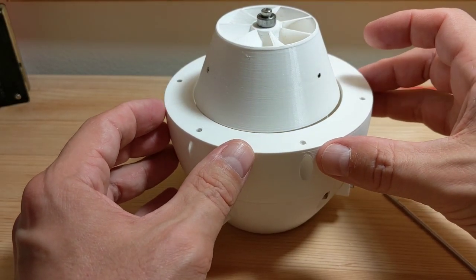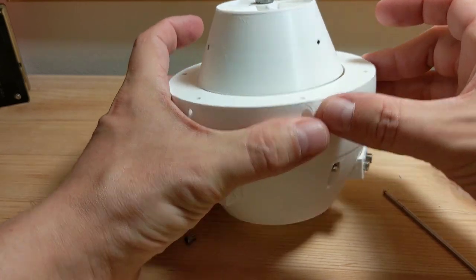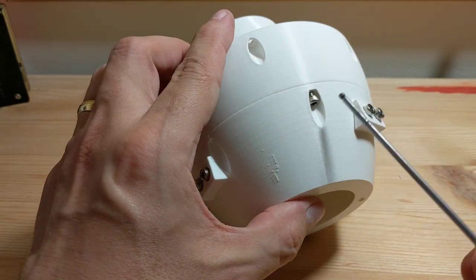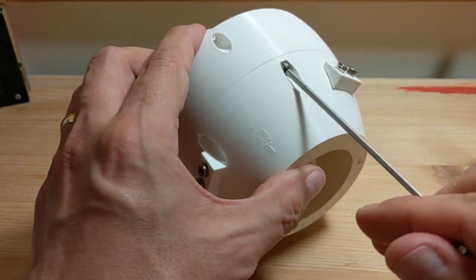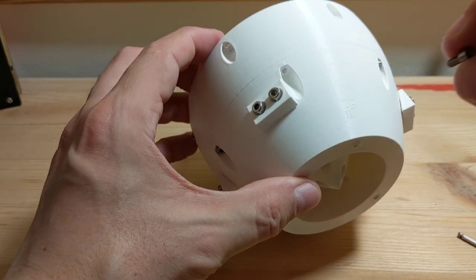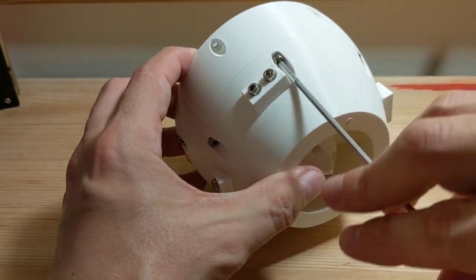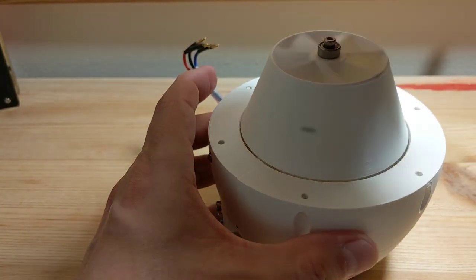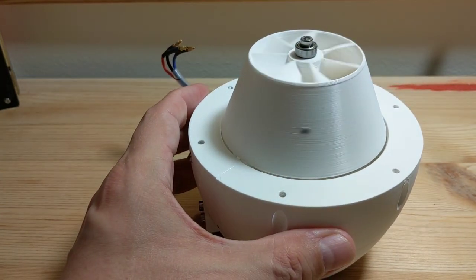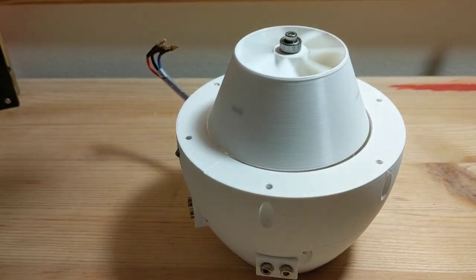So here you can see the other half fitting together. We're going to take that and then put the other screws in to hold that in place. We can then check to make sure that the rotor still spins freely.